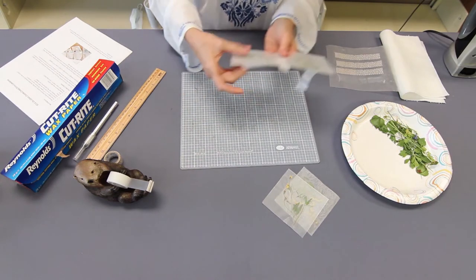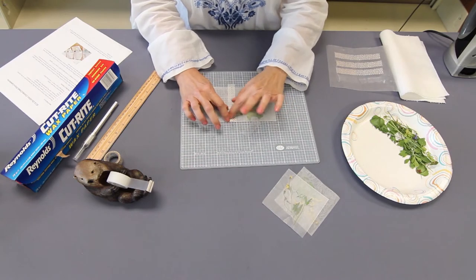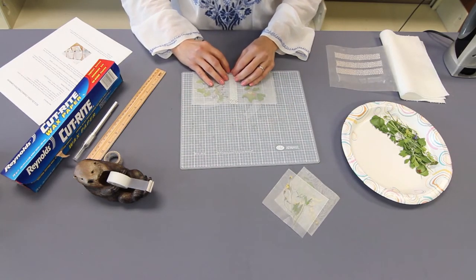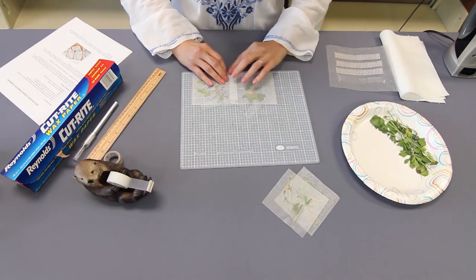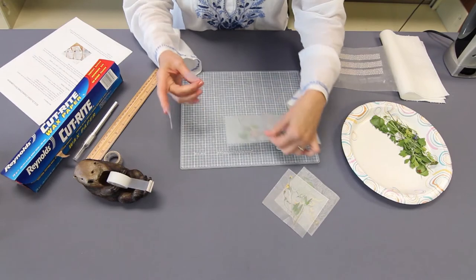Center it as best you can. Lift it up. Fold the edges down. There you go, you've got one seam done.